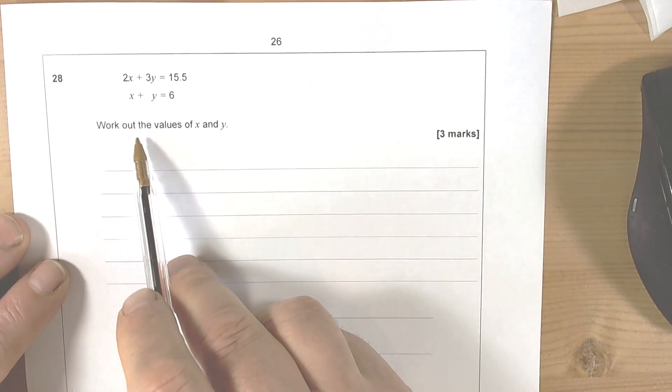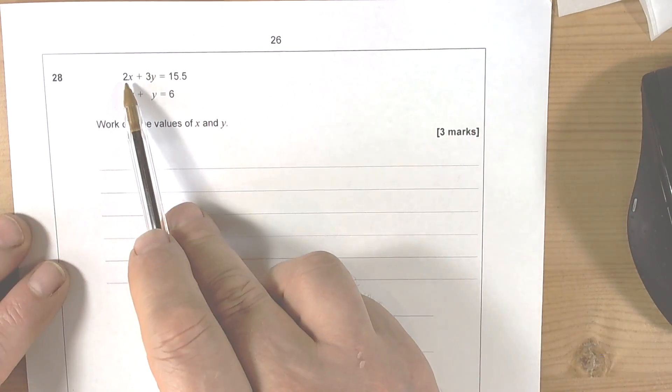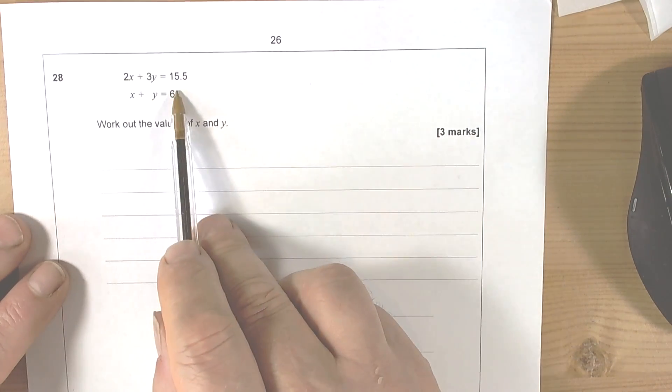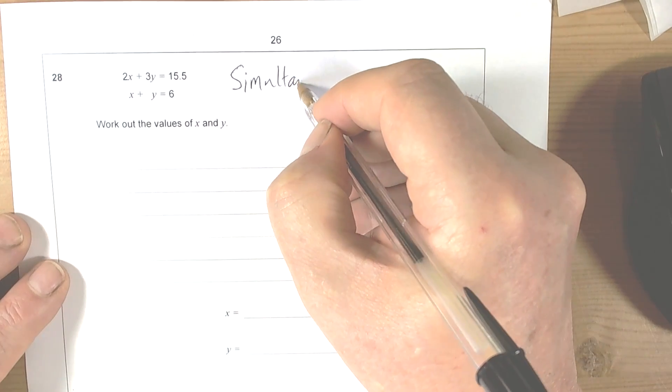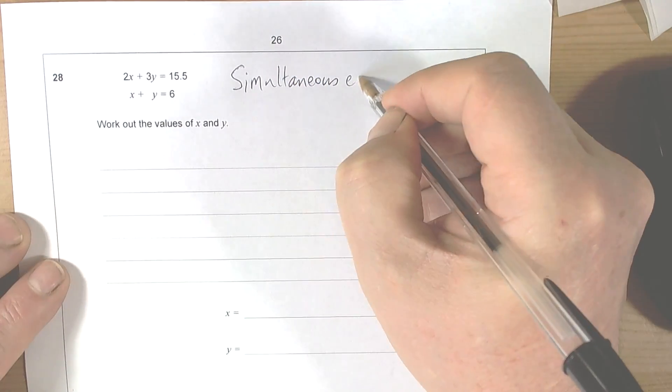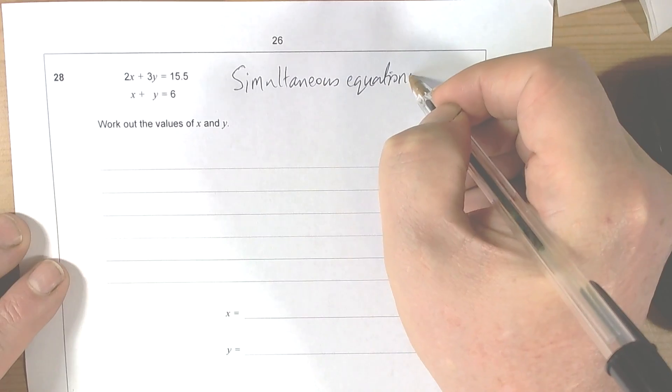Okay, so this question asks us to work out the values of X and Y. It's got two letters involved and two equations, so this is about a topic called simultaneous equations, depending on how much practice you've done on these type of equations.